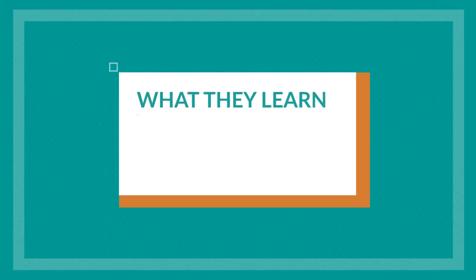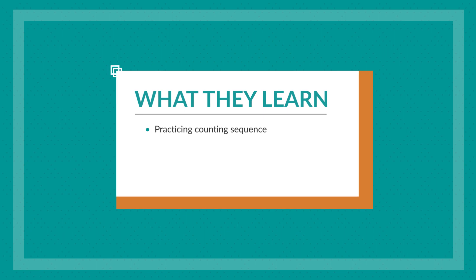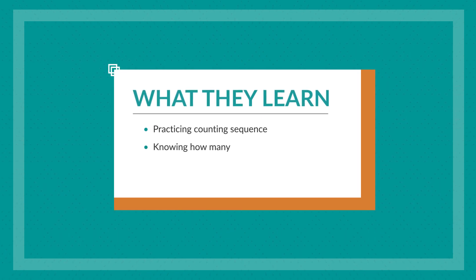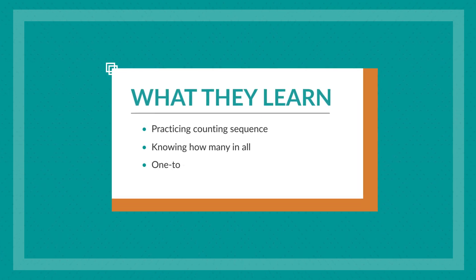Counting Together helps kids practice counting in the correct order, and with knowing how many there are in all. It's also helping them to see one-to-one correspondence, knowing that each time you put a token down, it's a one-token-to-one-number count.